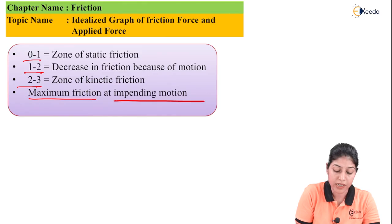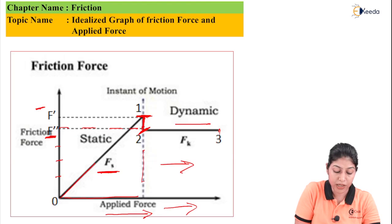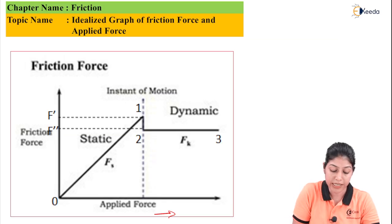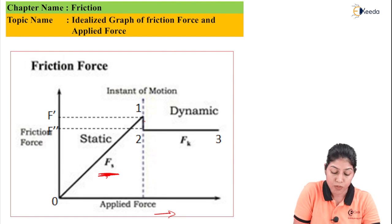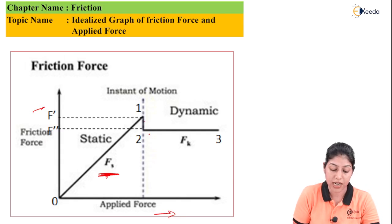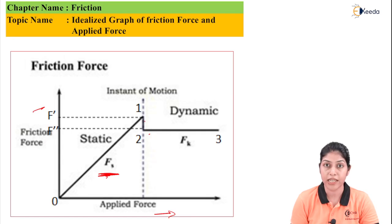Maximum friction is generally considered at impending motion. This graph represents the relation between friction force and applied force. When we increase the applied force, the friction force increases in the static friction zone; region 1 to 2 represents decrease in friction as the body starts motion; and from 2 to 3, the zone of kinetic friction applies as the body is in dynamic condition. F' is considered as the static friction condition and F'' represents the dynamic or kinetic friction.